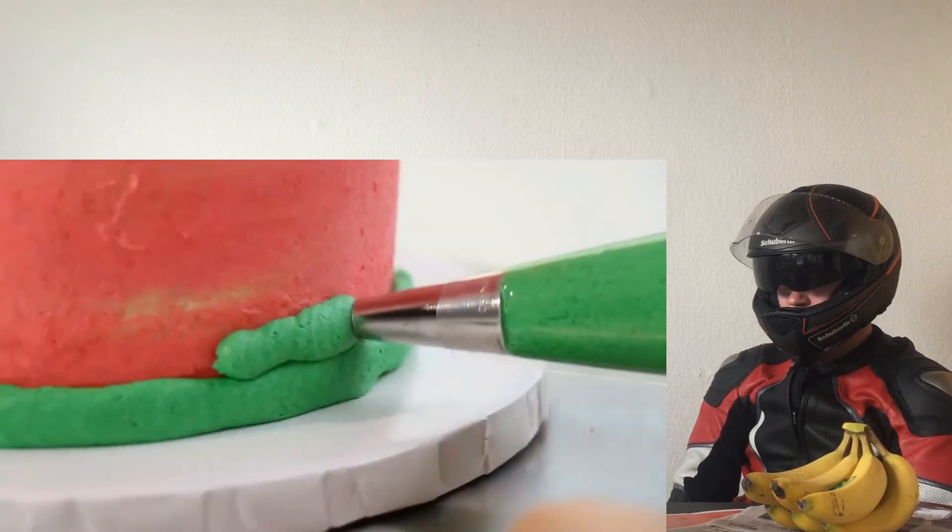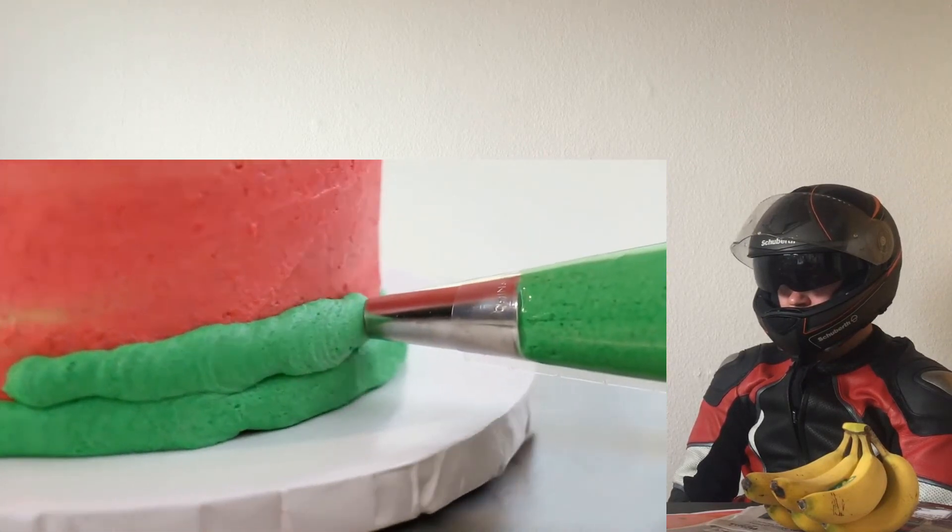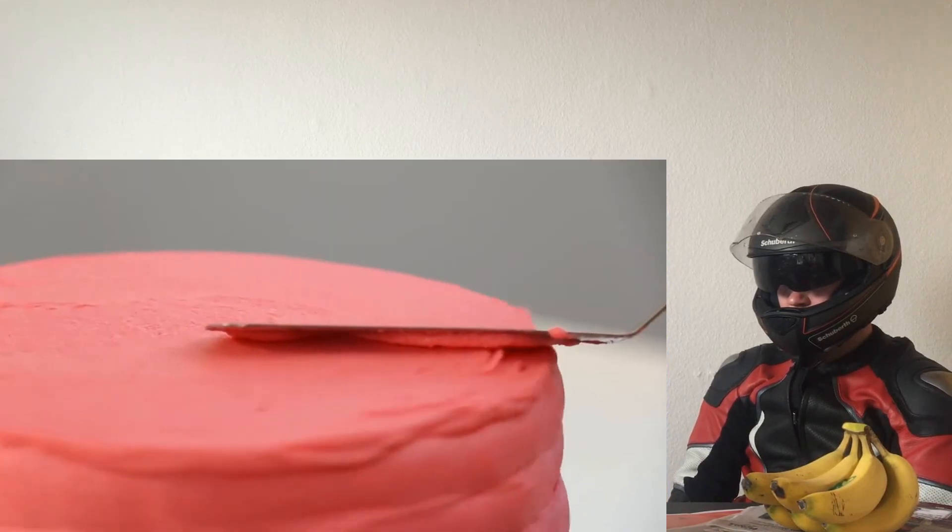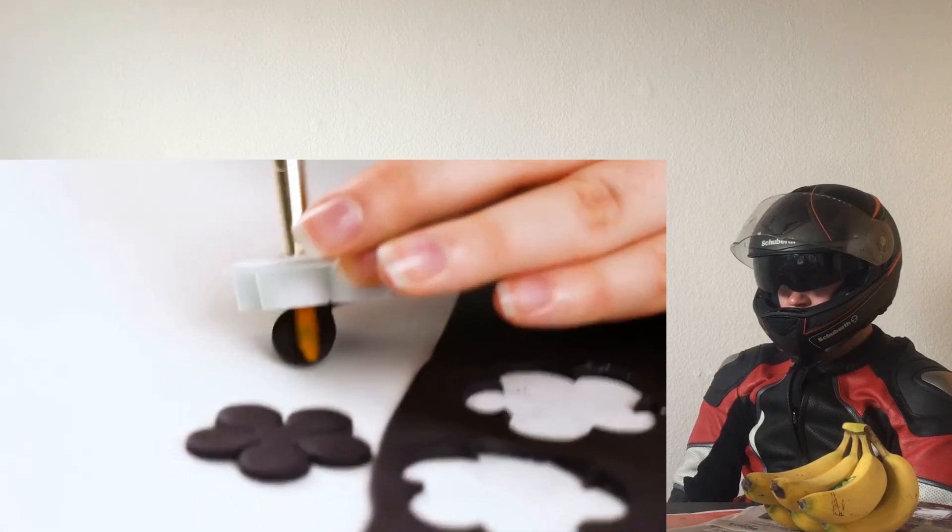I did two layers of buttercream and then for the rind I decided to use a light green buttercream. I just smoothed that out and then worked my way out.